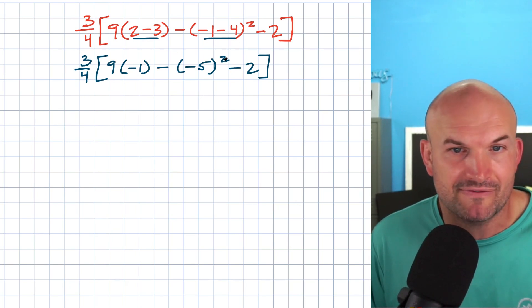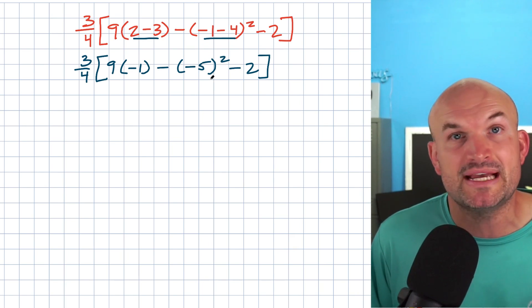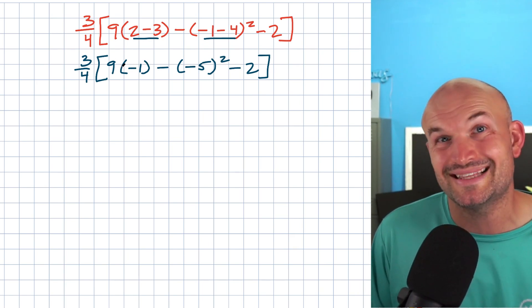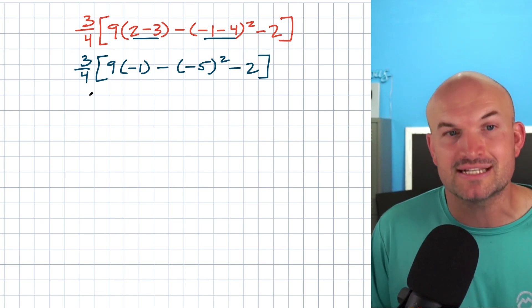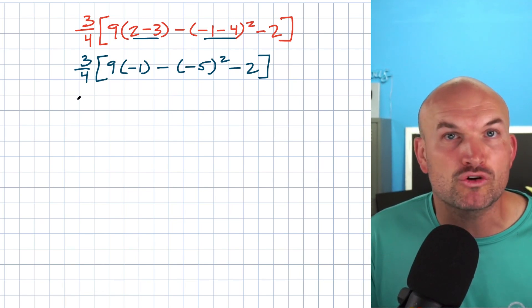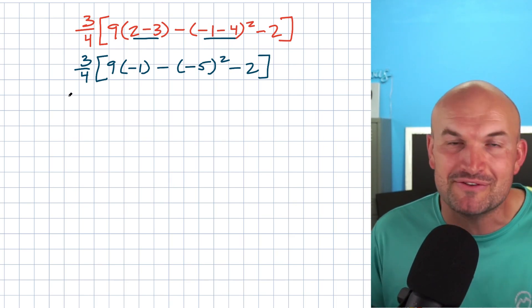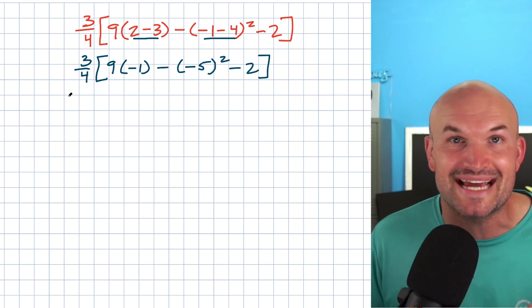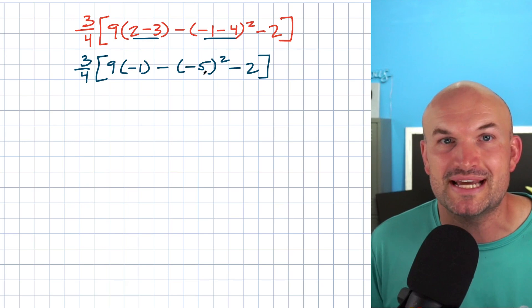The only power I have here is the squaring. I have a negative five squared, which is just going to be a positive 25. Now you could apply this operation at the same time, but I'm just going to follow my tip and take this slow. When you take things slow, that's usually a great way to avoid mistakes. Being a teacher myself and teaching thousands of problems, any time I try to condense or make things go fast is usually when I make a mistake.